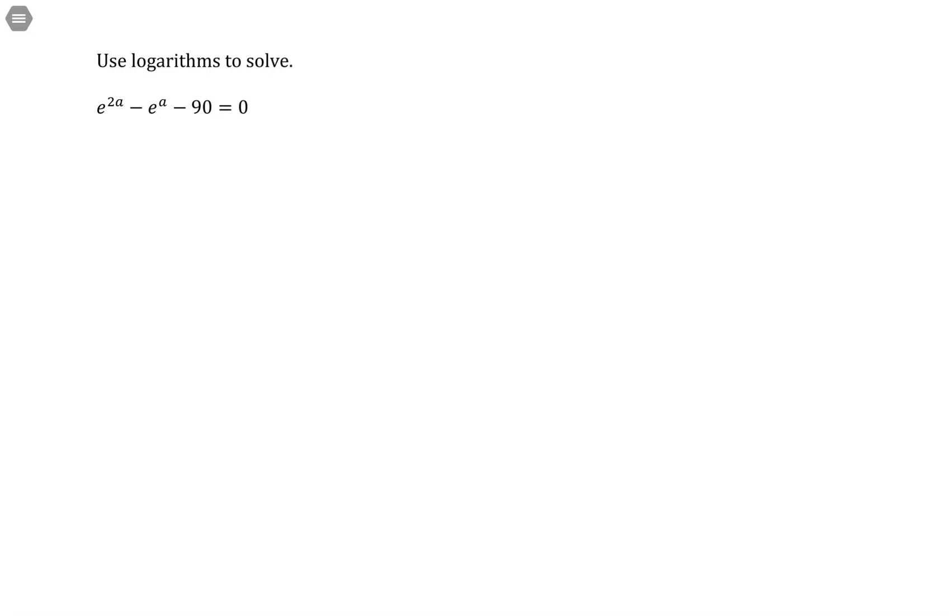Use logarithms to solve: e to the 2a minus e to the a minus 90 equals 0.